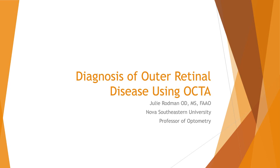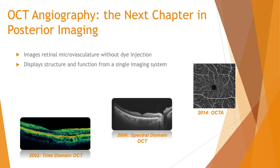To begin any lecture on angiography, I like to give a history of where we've been with OCT. In the early 2000s, time domain OCT was introduced, allowing us to visualize structural abnormalities noninvasively. However, there was a lot of pixelation and obscurity. Then spectral domain OCT was introduced with far superior resolution, taking a lot of the guesswork out. But these technologies only provided structural information — we weren't able to look at vascular supply or flow to the retina and choroid.